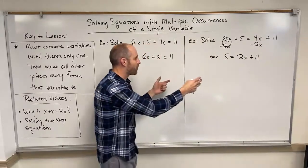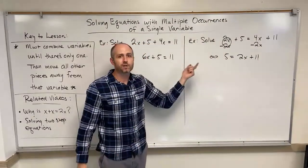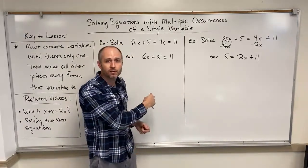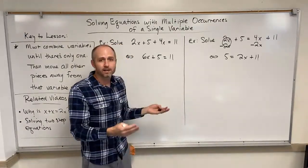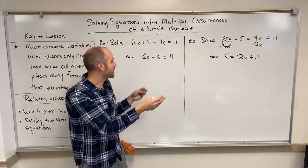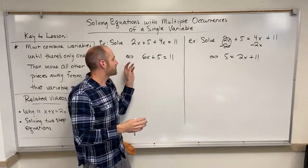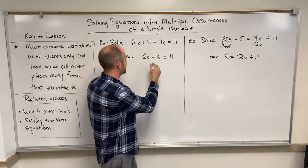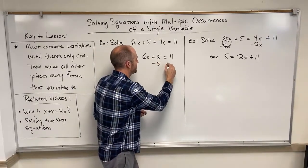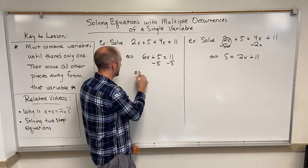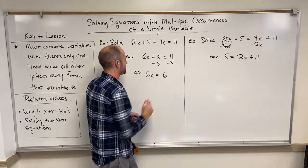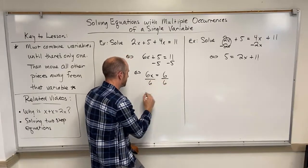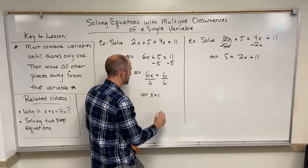Now at this point, both of these equations are two-step equations. And then we can employ the technique that we talked about at the beginning of the video, which is isolate x, move everything away from x. So now we're just using properties of equality to move pieces away from x and get equivalent statements. So we can subtract 5 from both sides and we'll get 6x equals 6. And then I can divide both sides by 6 and we'll get x equals 1.